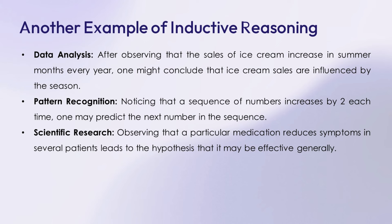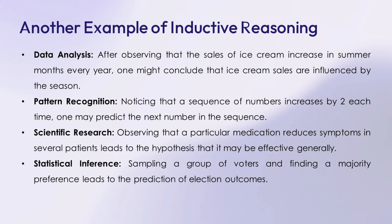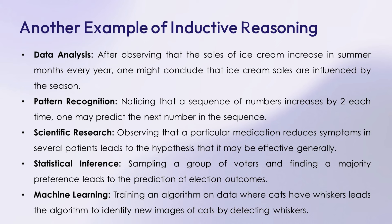Number 3: scientific research — observing that a particular medication reduces symptoms in several patients leads to the hypothesis that it may be effective generally. Number 4: statistical inference — sampling a group of voters and finding a majority preference leads to the prediction of election outcomes. Number 5: machine learning — training an algorithm on data where cats have whiskers leads the algorithm to identify new images of cats by detecting whiskers.